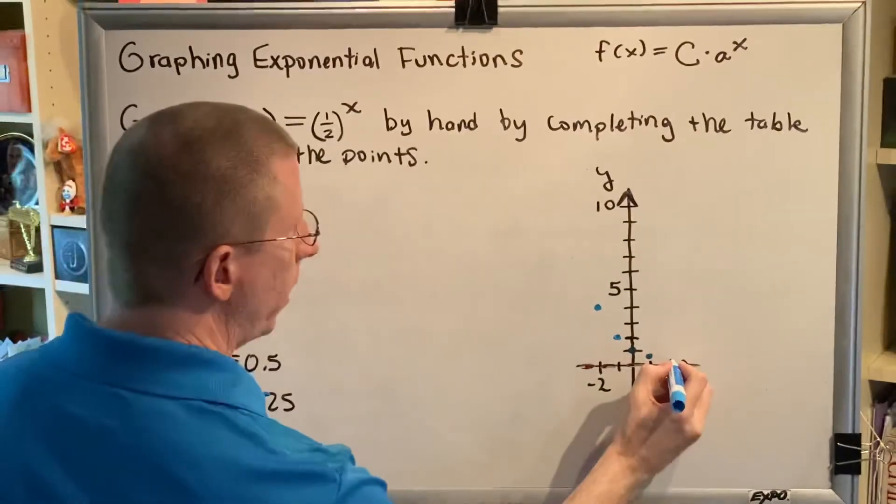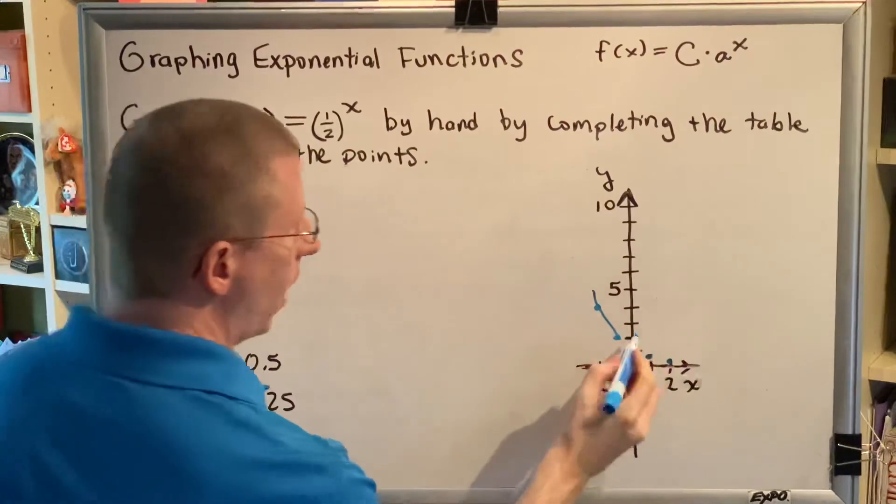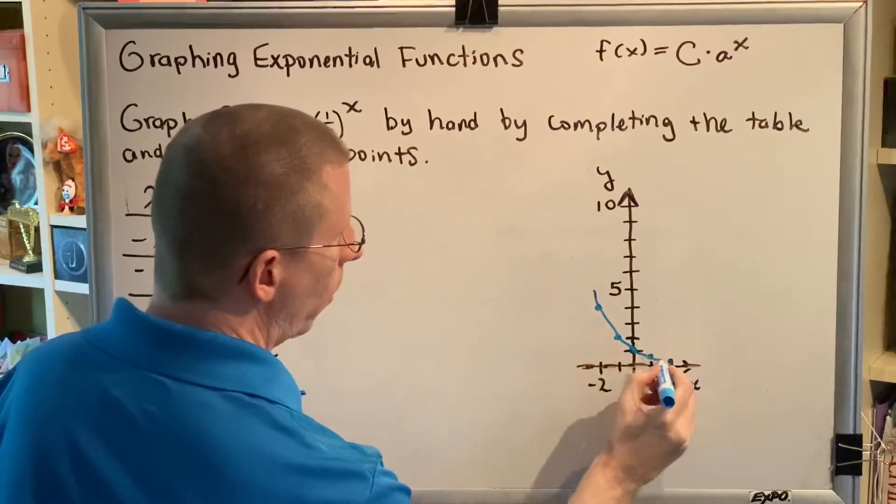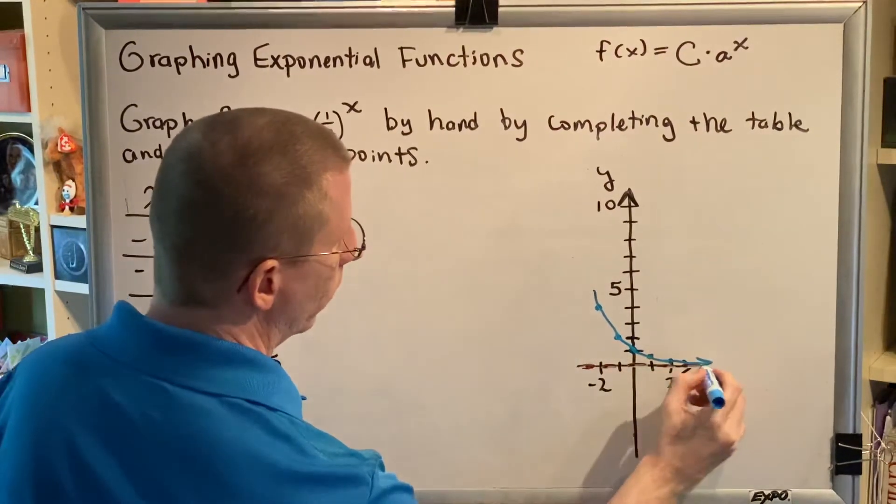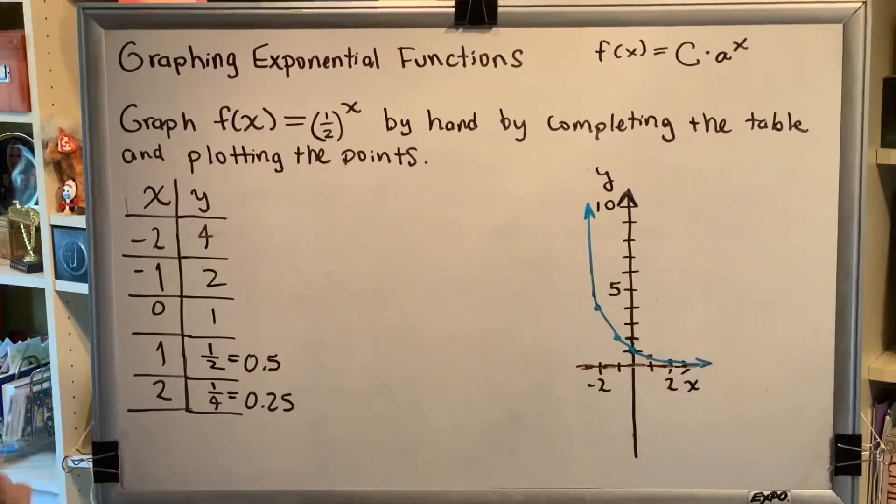(1, 1/2) would be here. (2, 1/4) would be here. And we connect our dots together, and we approach the asymptote. And there we go, we've created our graph.